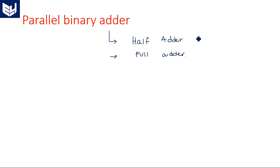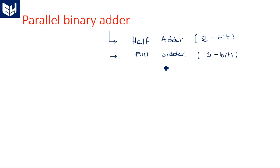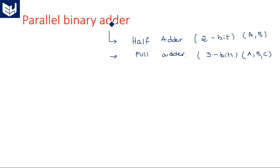What do you mean by half adder and full adder? A half adder is able to add only two bits of information. A full adder can add three bits of information at a time — for example, A, B, C. So half adder adds two bits and full adder adds three bits of data.